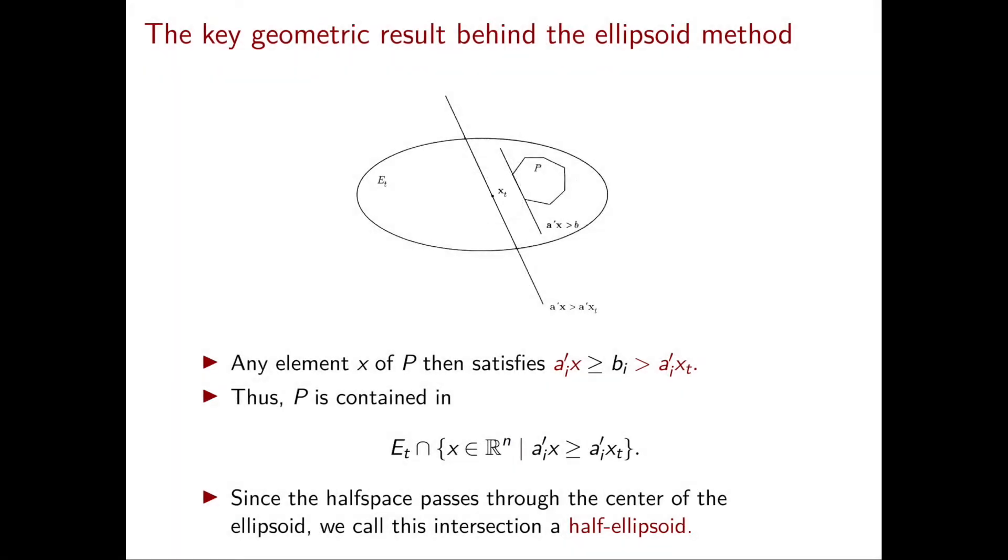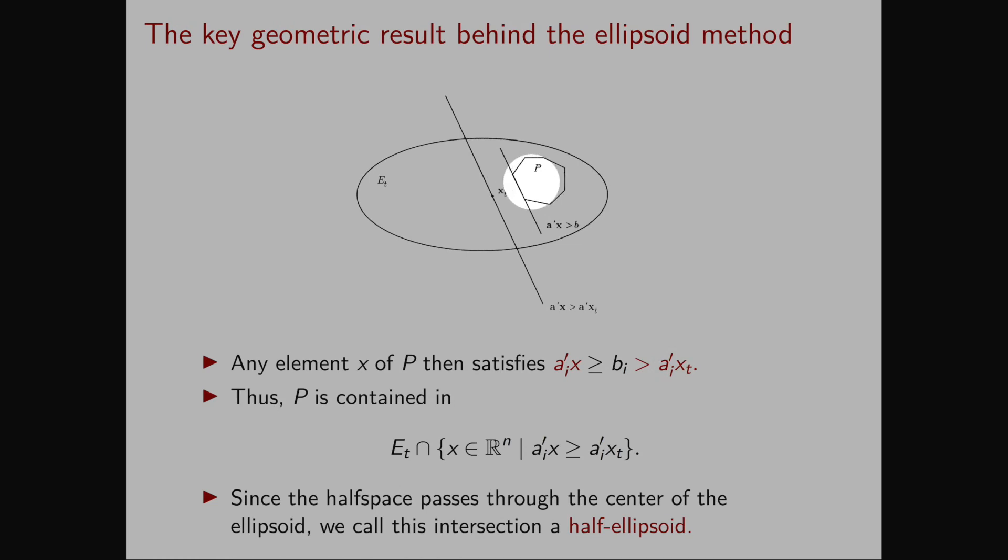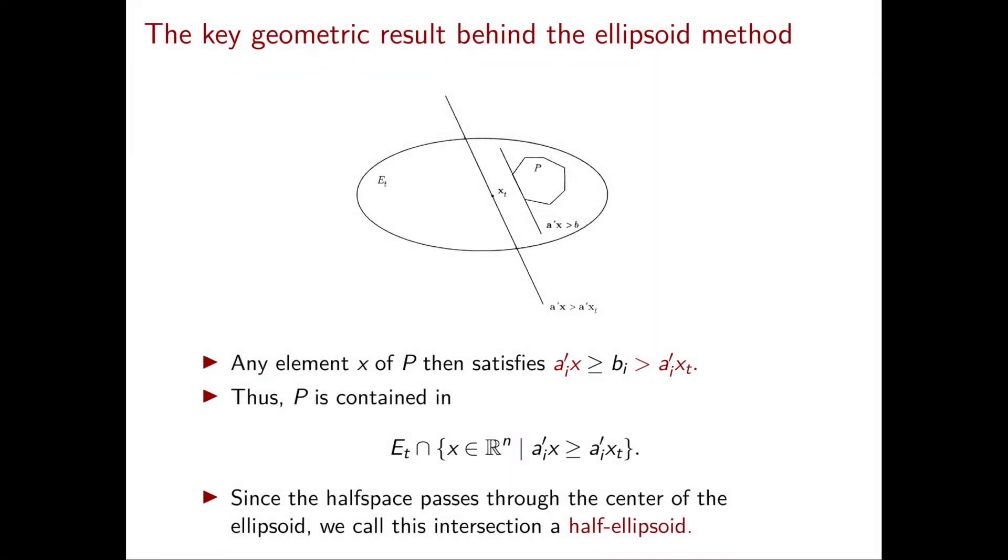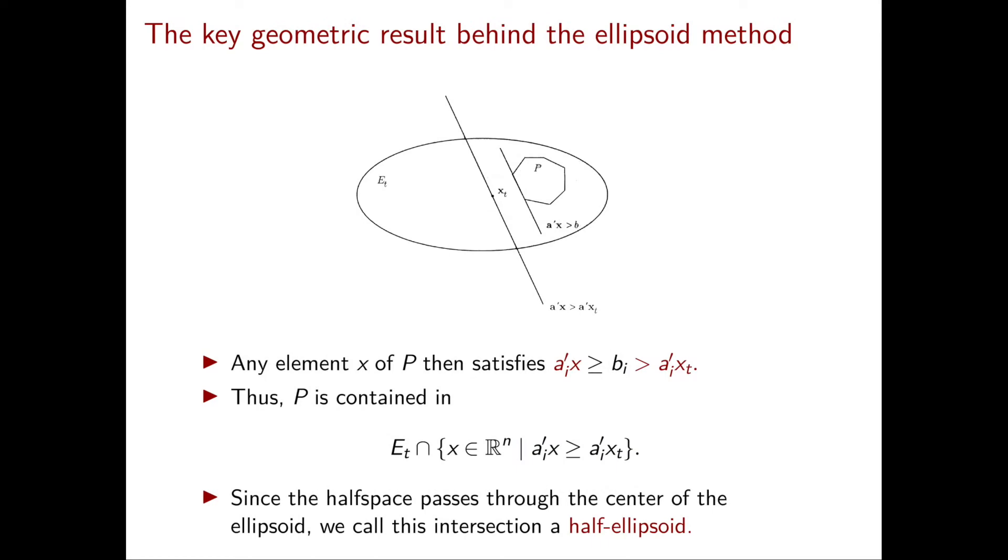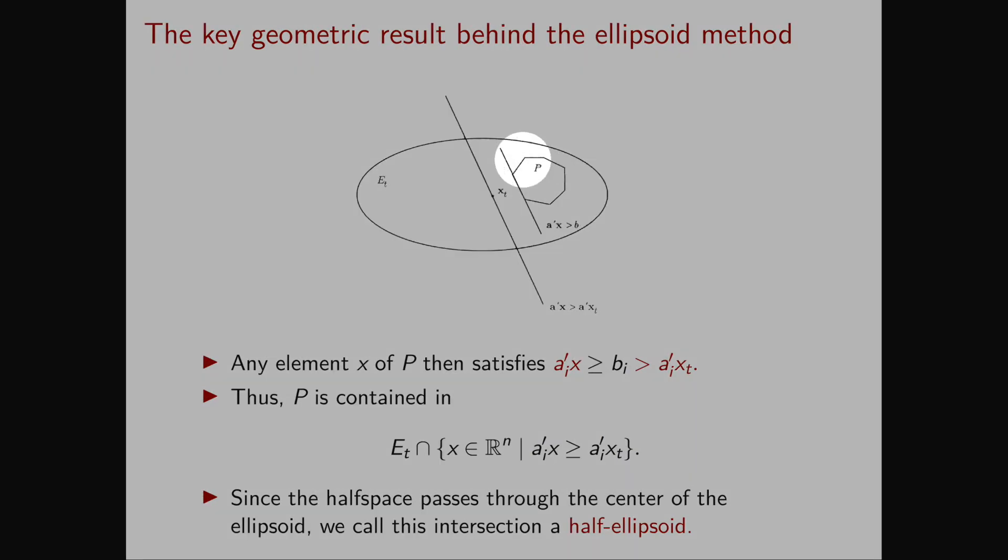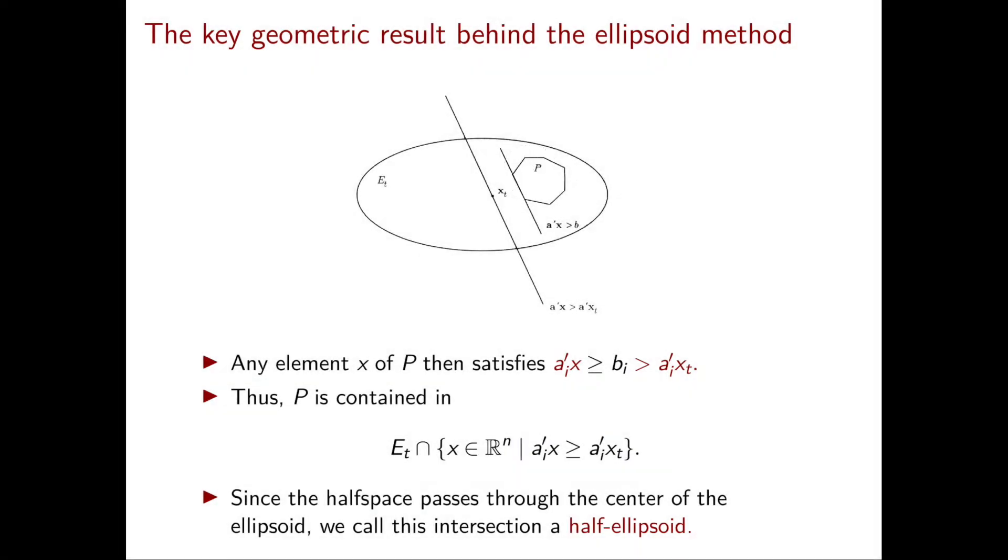Next our ellipsoid algorithm translates this inequality so that it passes through x_t. Now the original inequality was valid for P so the new translated inequality is valid for P as well. Now we look at the set of points in the ellipsoid E_t that satisfy this new translated constraint. Since this translated inequality passes through the center of the ellipsoid we call this region a half ellipsoid.